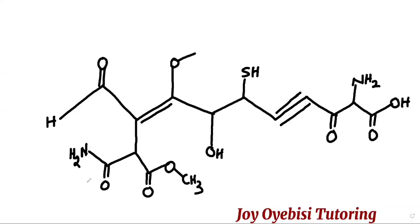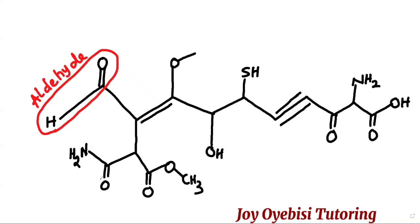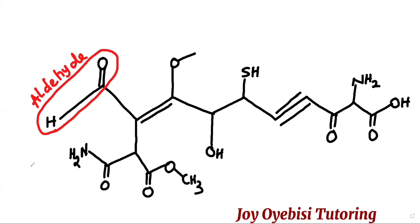In this video I'm going to be showing you how to identify the functional groups in this compound. The first functional group is called an aldehyde. An aldehyde has a carbonyl group, which is C double bond O, connected to at least one hydrogen. It can also connect to any alkyl group — alkyl groups are carbon chains — but there must be at least one hydrogen, and that's what tells you it's an aldehyde.